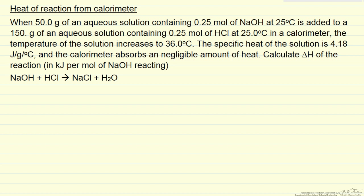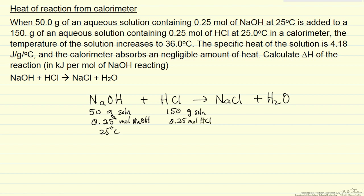This is a problem I haven't looked at before, so when I approach a problem like this, first it's important to write down the information and I'm going to write it down with the reaction. So, acid-base reaction. We have 50 grams of the solution. This contains 0.25 moles of sodium hydroxide at 25 degrees C, and we have 150 grams of this solution HCl. It contains 0.25 moles of HCl, also at 25 degrees C, and then the final solution is at 36 degrees C.